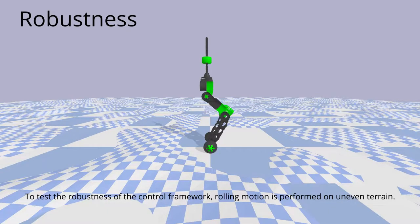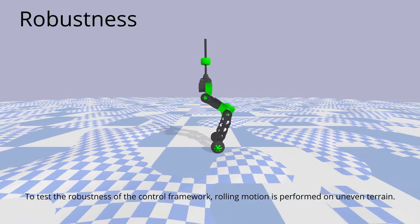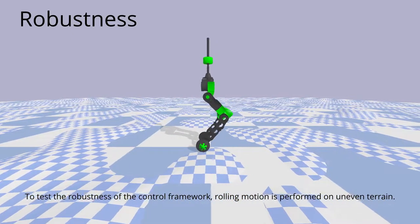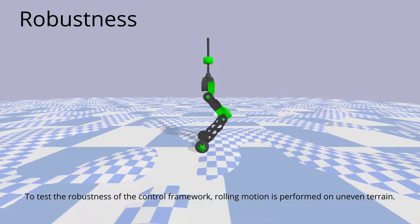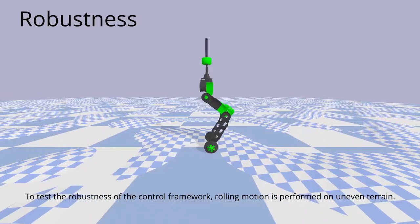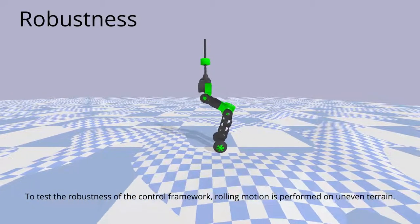To further test the robustness of the control framework, the rolling motion is performed on uneven terrain. The terrain is generated from Perlin noise and the robot has no prior knowledge of it. The acceleration and deceleration are caused by the terrain unevenness.